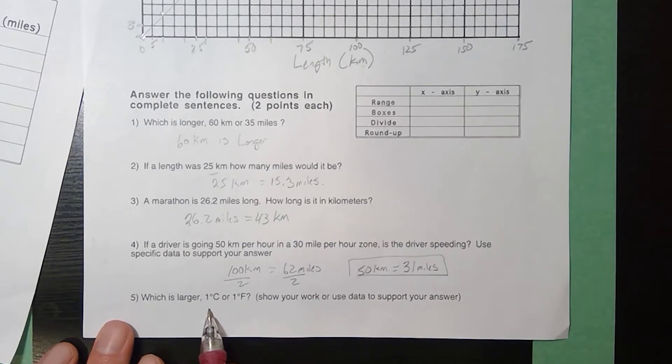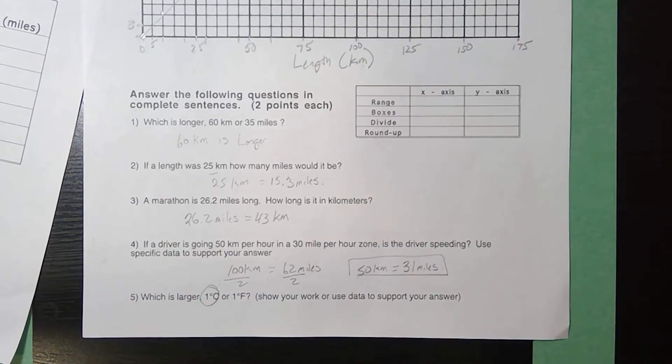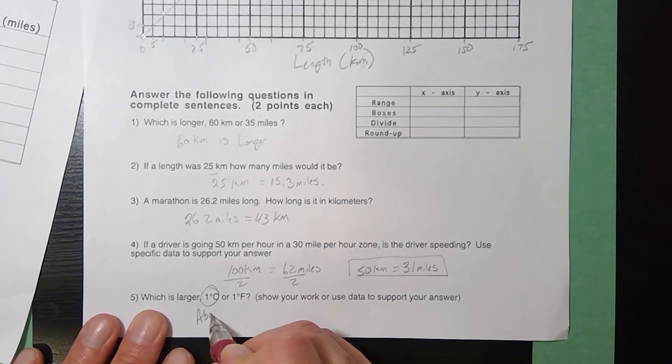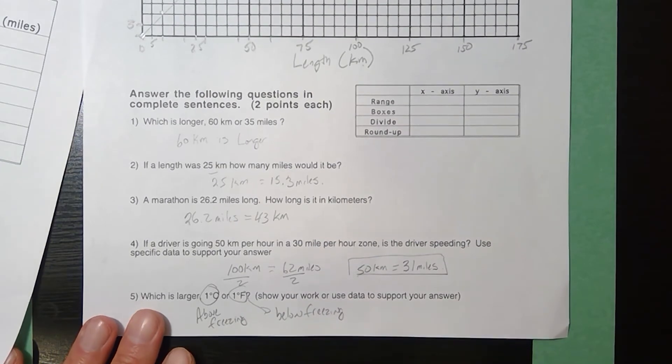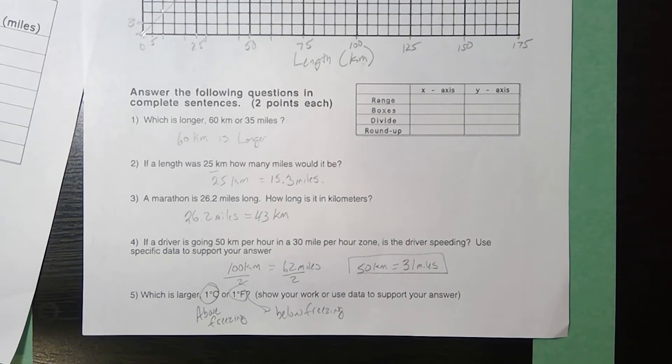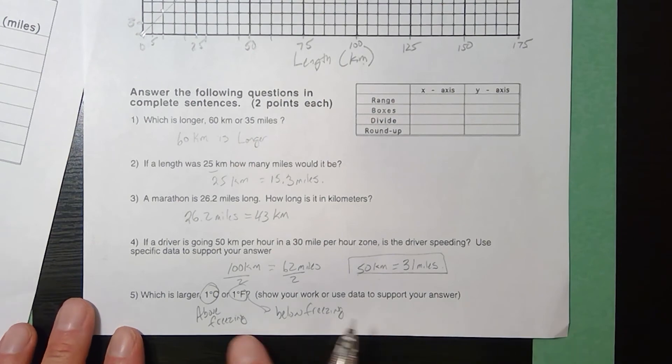Now, which is larger, one degree Celsius or one degree Fahrenheit? Well, you can answer this in a couple of ways, but it's definitely one degree Celsius. One degree Celsius is going to be above freezing. And you know one degree Fahrenheit is definitely below freezing. If you have a change of one degree Celsius, it's also bigger than a change of one degree Fahrenheit. So any way you want to analyze this question, one degree Celsius is bigger than one degree Fahrenheit.